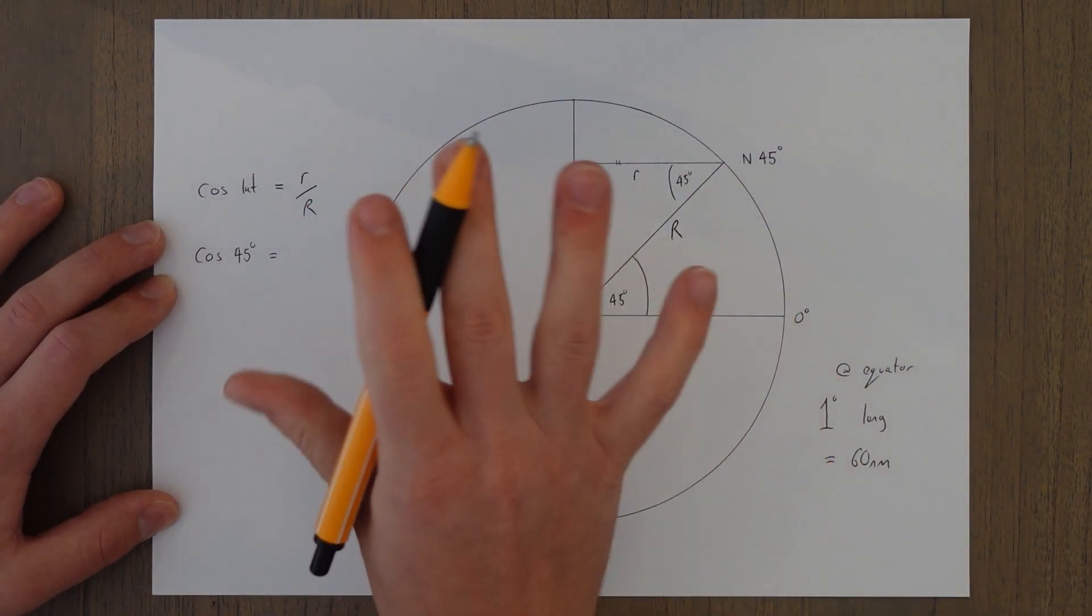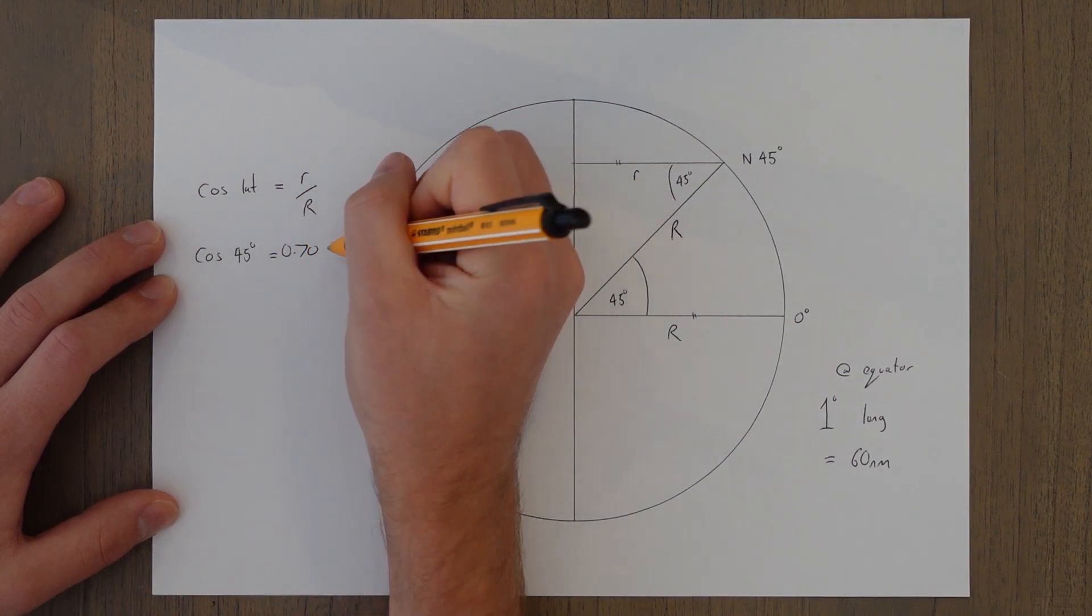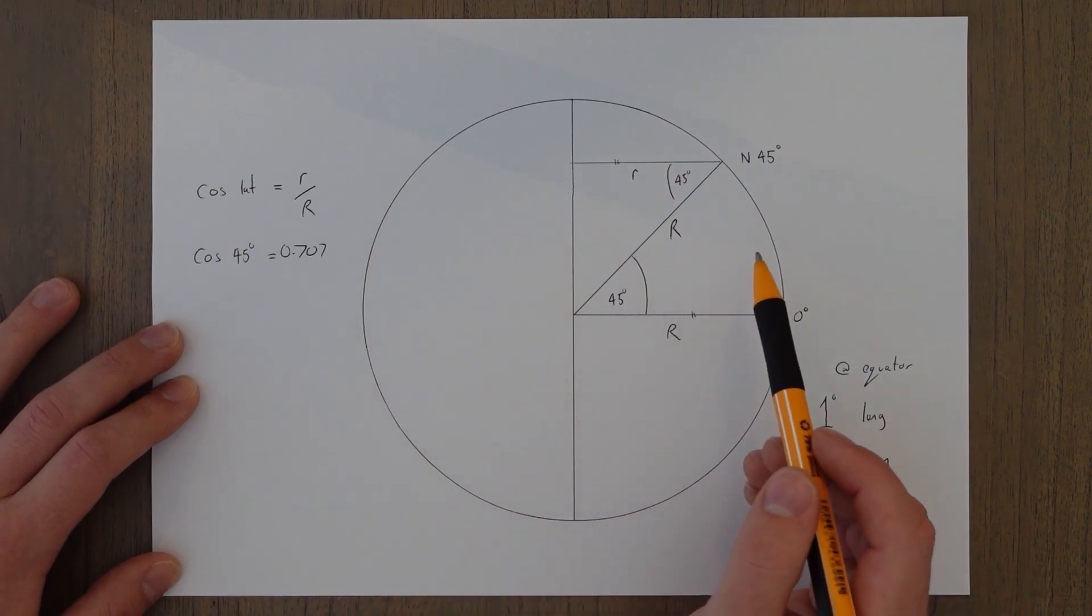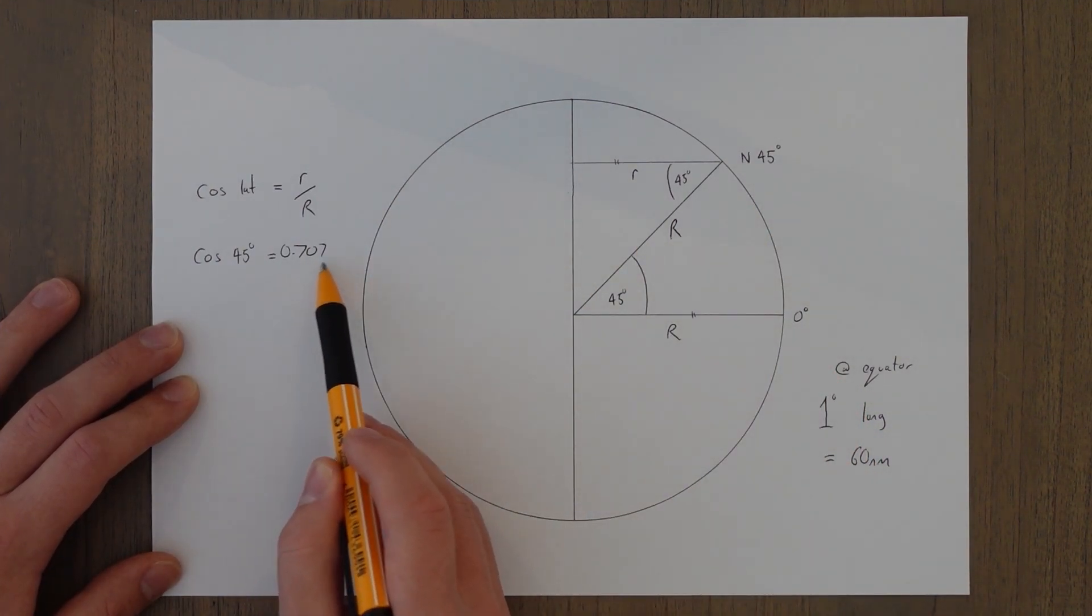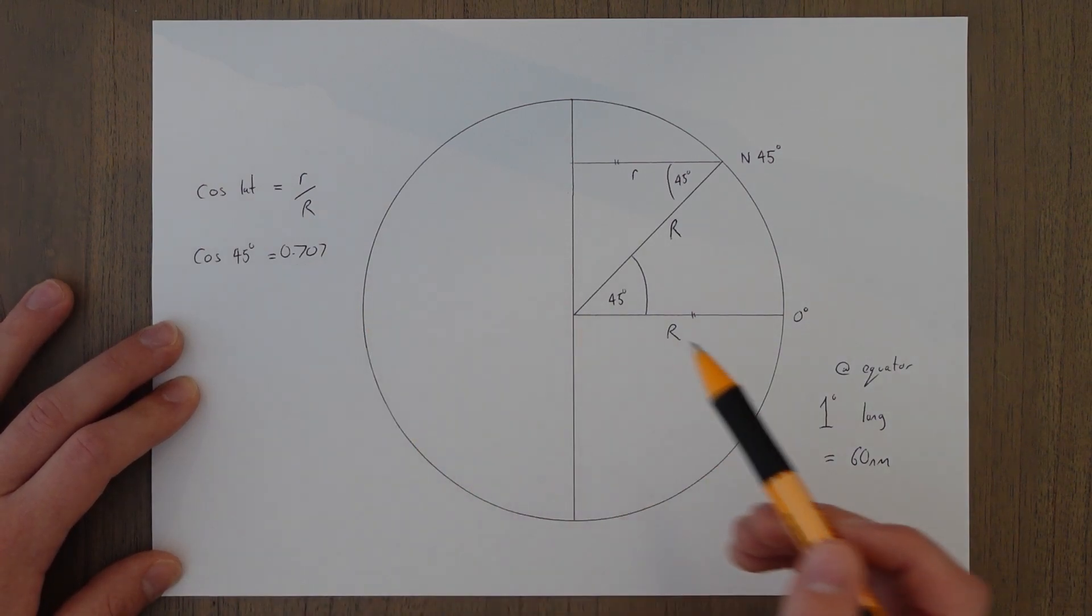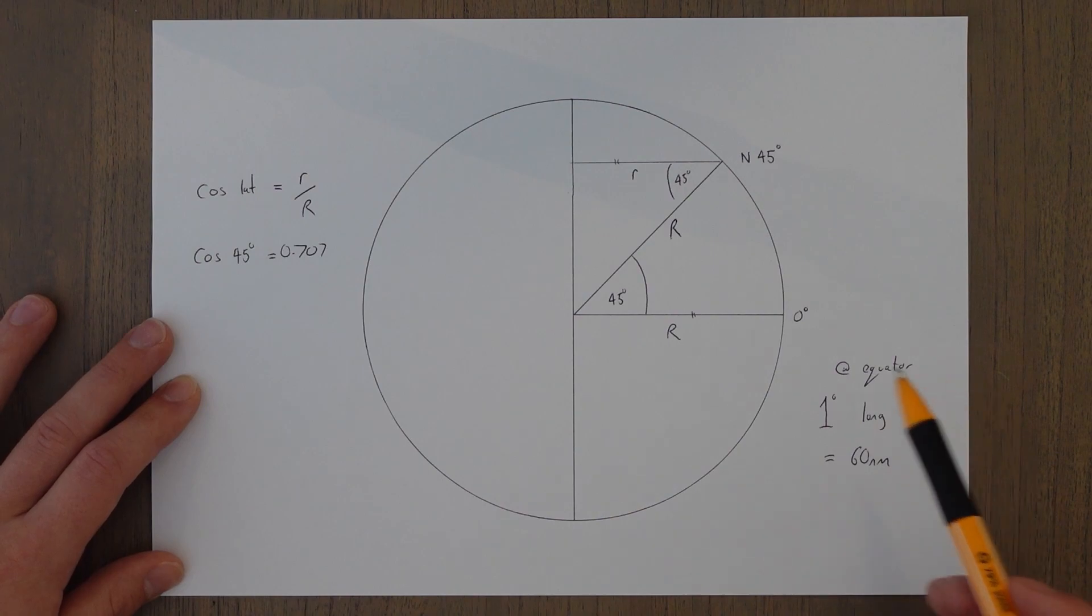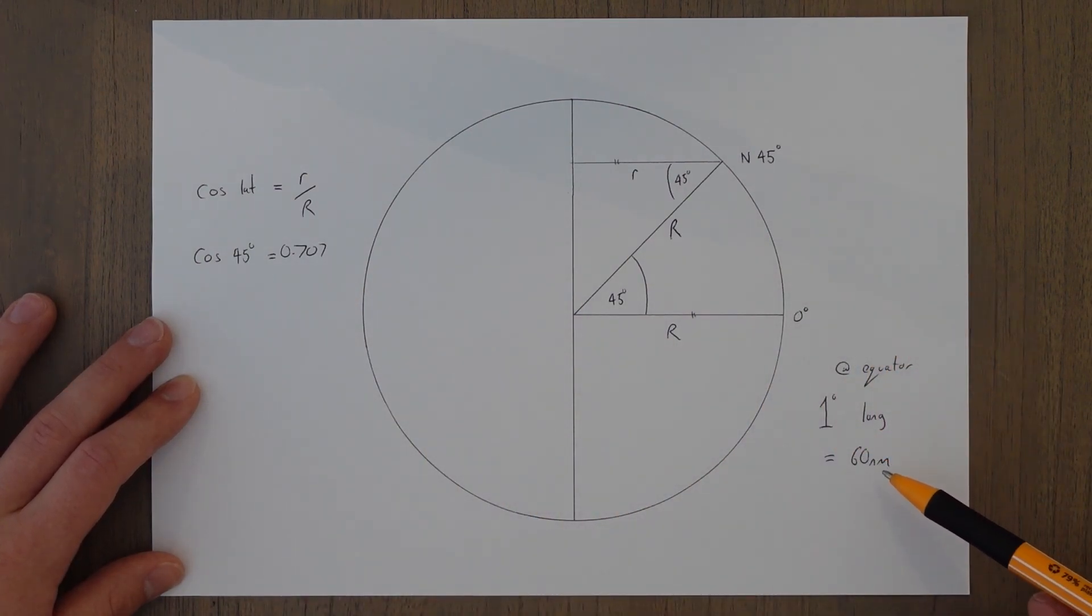So we're going to be finding a proportion of the small radius to the big radius. And then if we substitute in for this example, cosine 45 degrees is going to give us our proportion in terms of size of the change in longitude at the equator. So cosine 45 is near enough 70%, or it'll be 0.707 I think it is. So we can say that at north 45 degrees, we're only going to cover 70% of this 60 nautical miles for every one degree change in longitude. So for every one degree change in longitude at 45, it's only going to be, what's that, 42 nautical miles instead of 60 nautical miles.